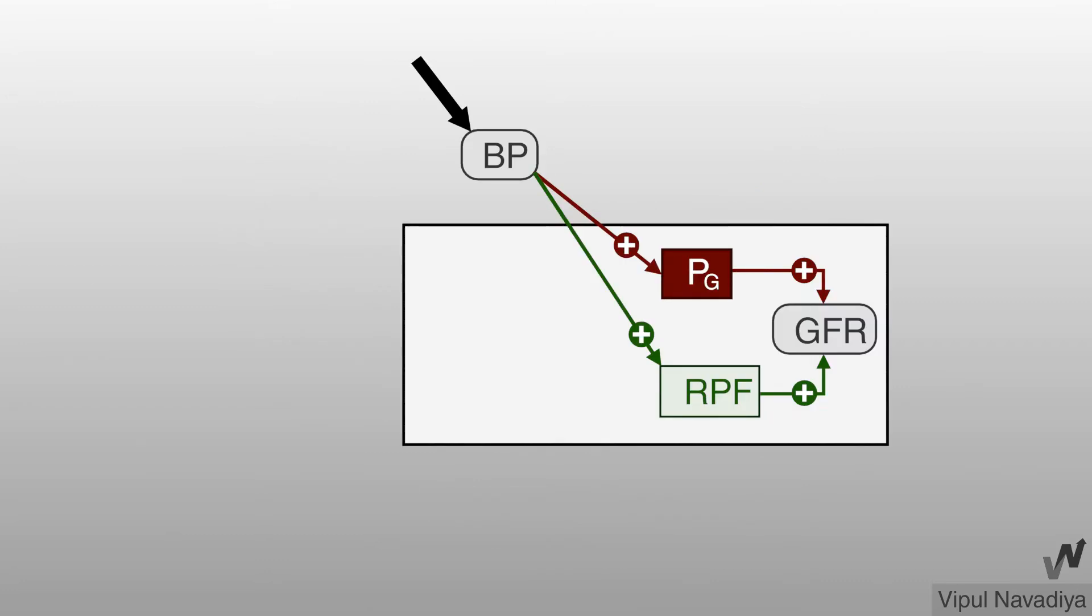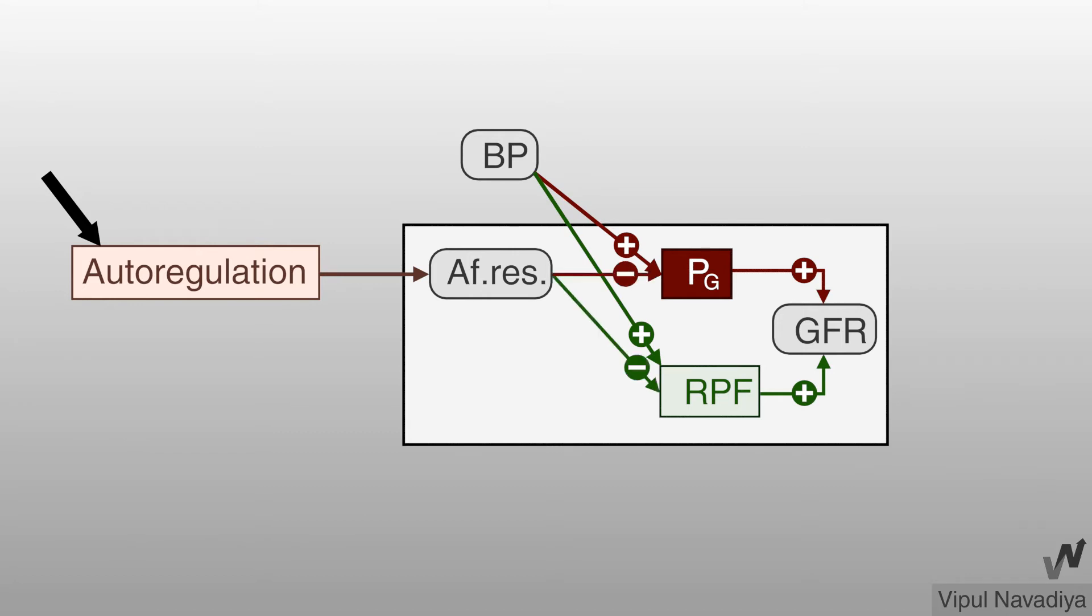We know that changing blood pressure produces changes in GFR by affecting glomerular hydrostatic pressure and renal plasma flow. In most basic sense, autoregulation adjusts afferent arteriolar resistance in such a way that counteracts those changes in hydrostatic pressure and renal plasma flow. This adjustment in afferent arteriolar resistance is achieved by two mechanisms.